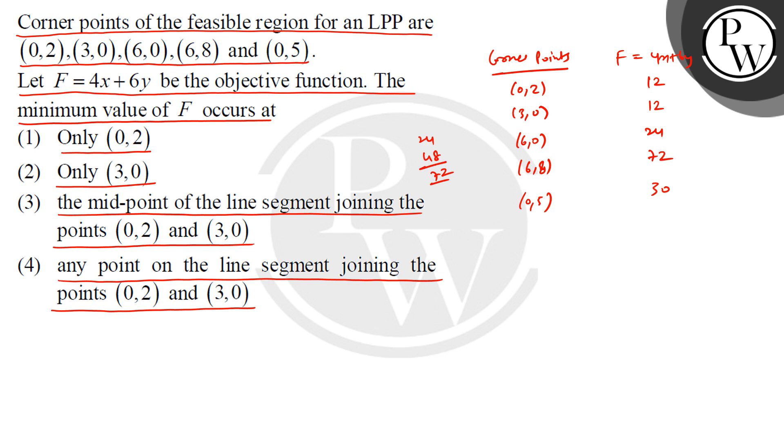So let me confirm: at (6,8), we have 4 times 6 equals 24, and 6 times 8 equals 48, so 24 plus 48 equals 72.